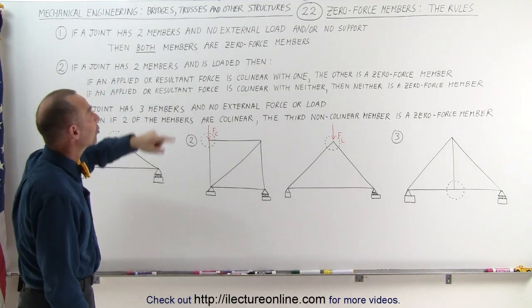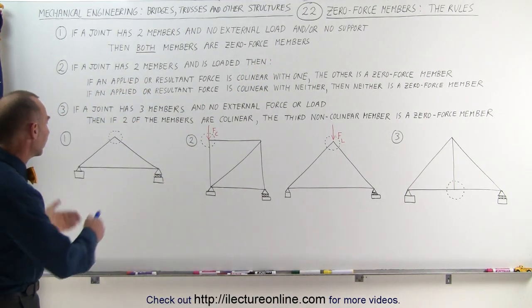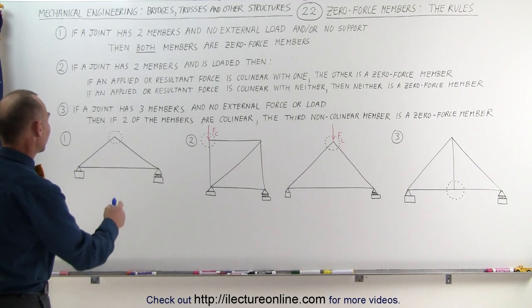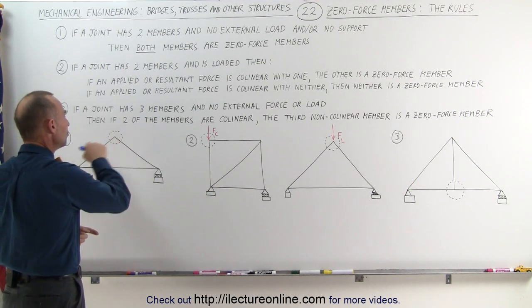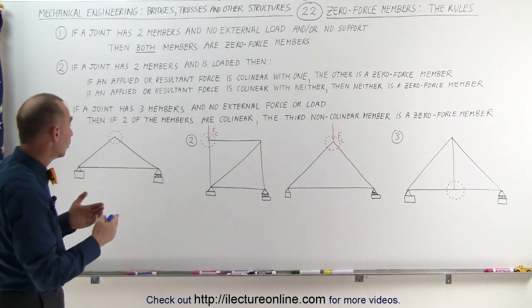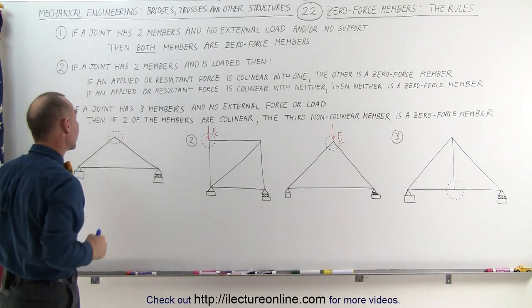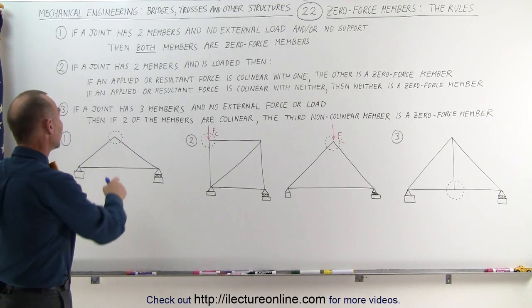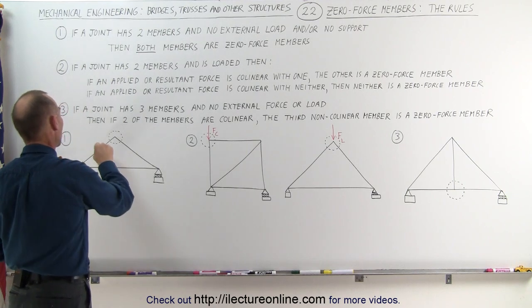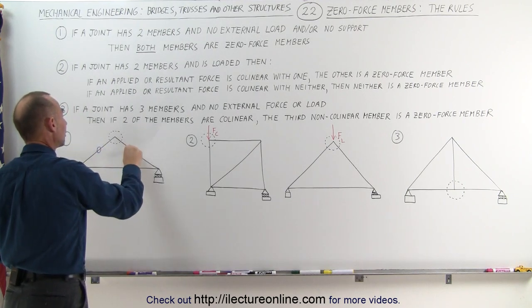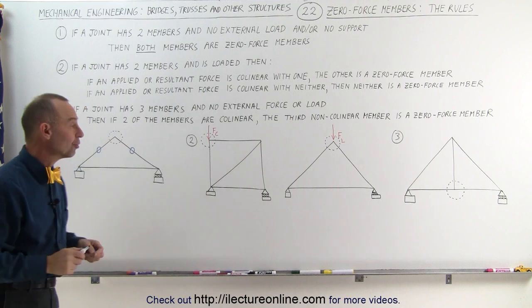then both members are what we call zero force members. Well, here's an example. We have a joint here that has two members, but there's no load, there's no external load pushing down on the members. If that's the case, then both members must be zero force members, and one of the ways to denote that is simply to put a zero on top of each of the two members.